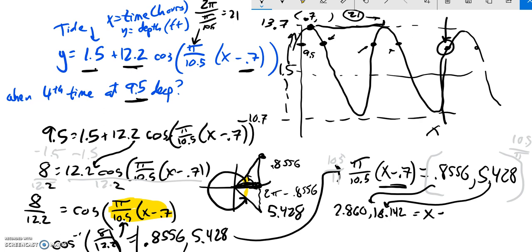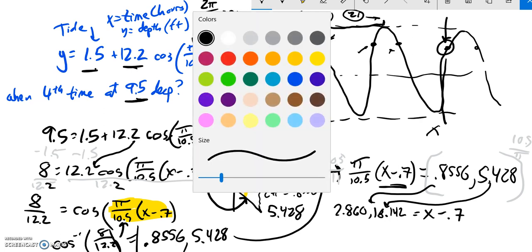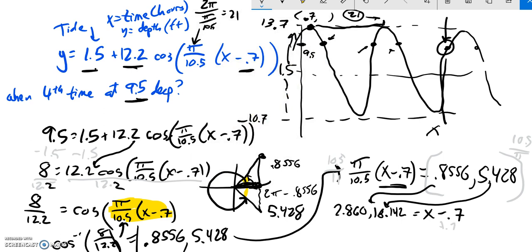And notice that's equal to x minus 0.7. So now what I'm going to do is I'm still solving for x, so I'm just going to add 0.7 to everything. So 3.56 and 18.842.